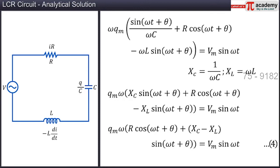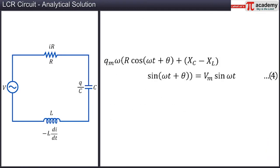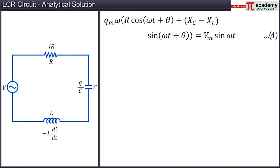Let this be equation 4. Similar to resistance in a DC circuit, we introduce a quantity called impedance in AC circuits, denoted by Z. Z is the impedance of the LCR series AC circuit and is expressed as Z equal to square root of R² plus (Xc minus Xl)². In equation 4, multiplying and dividing the left-hand side by the impedance Z, we get equation 5.